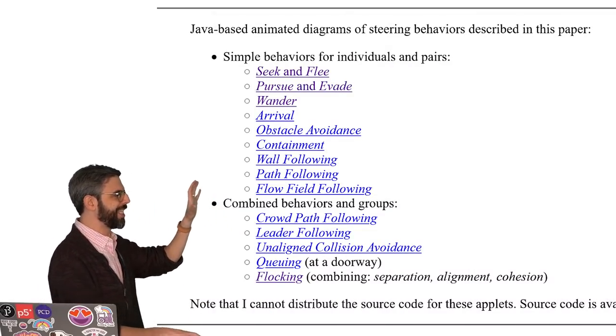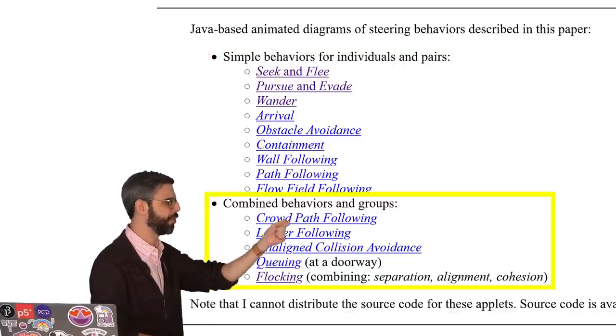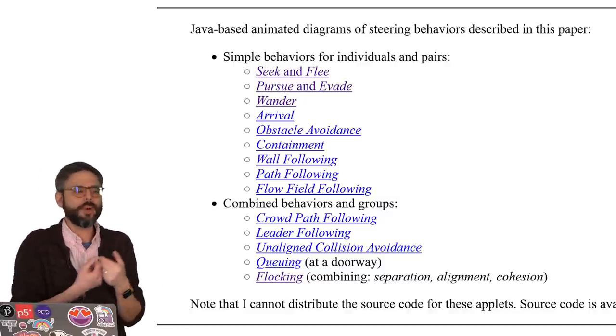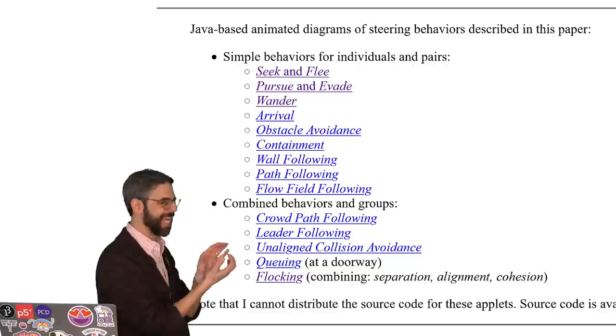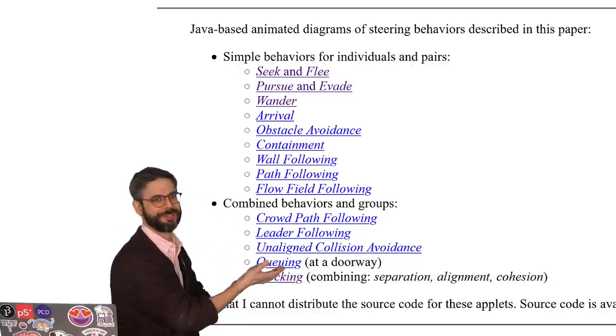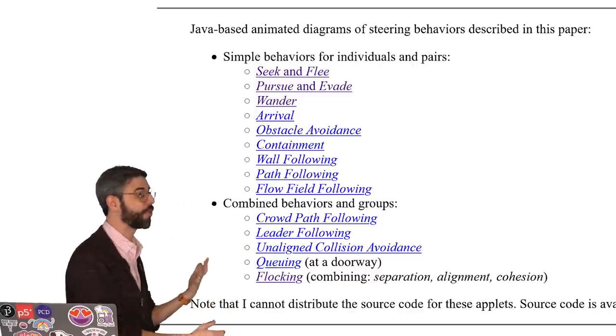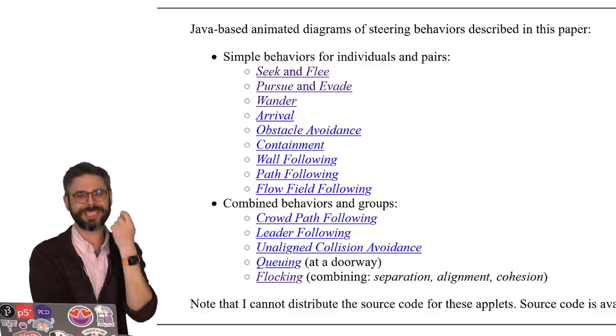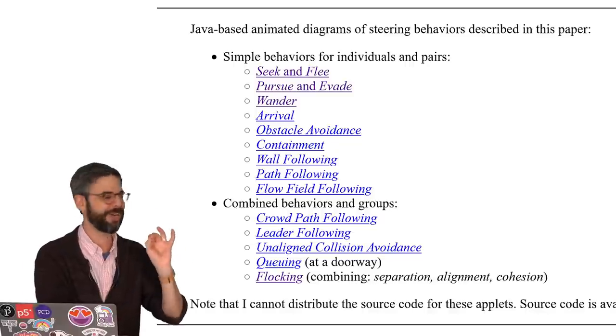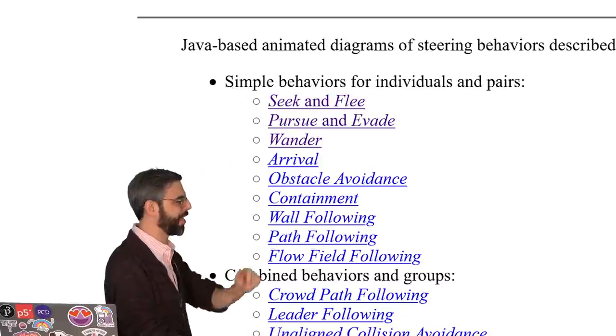But if you want to contribute and try any of them that I haven't done already, I highly encourage you to do so. I should also note here this distinction between simple behaviors for individuals and pairs and combined behaviors in groups. So this idea of emergence of a complex system, that's really going to arrive when I get to going through combined group behaviors, flocking being the one that I refer to as the sort of ultimate example of this chapter. But I'm going to start in a few videos just going through the sort of core foundational examples of what it means to program an implementation of Craig Reynolds' steering force.